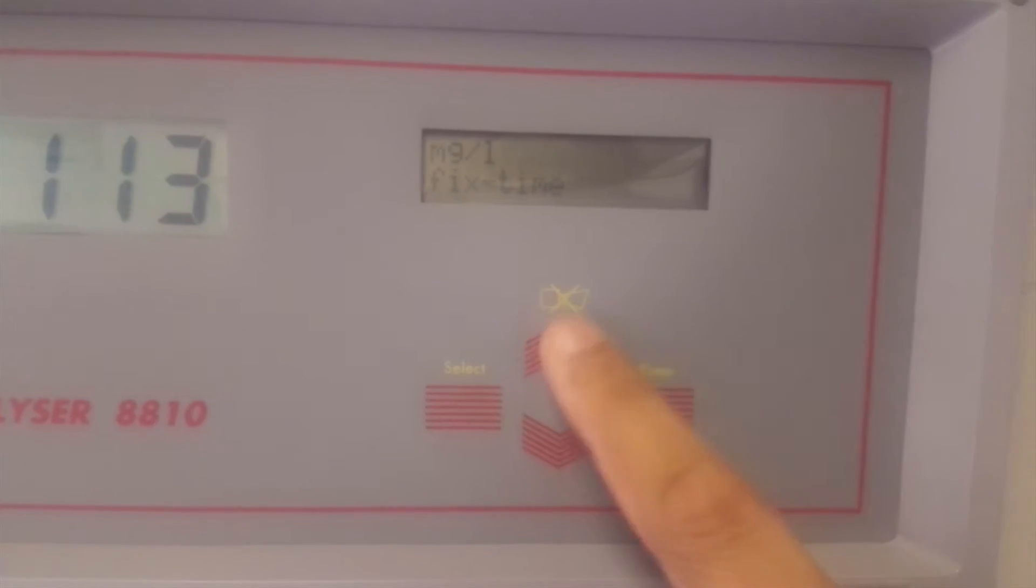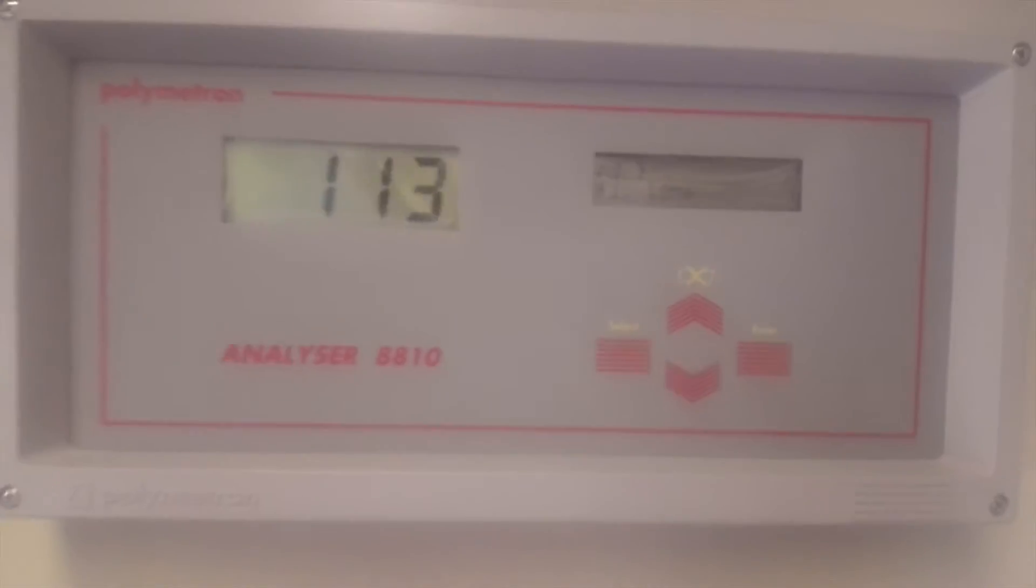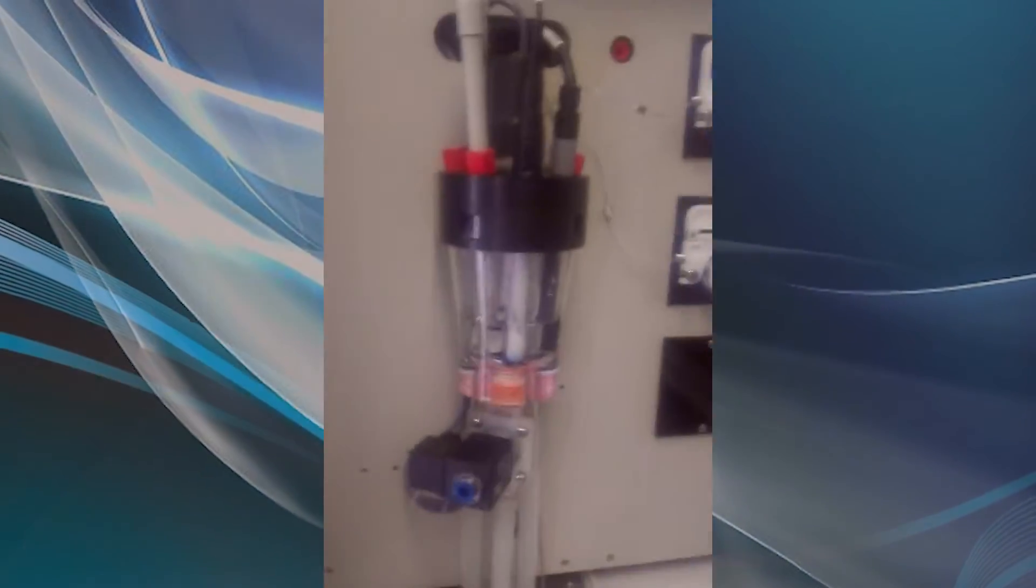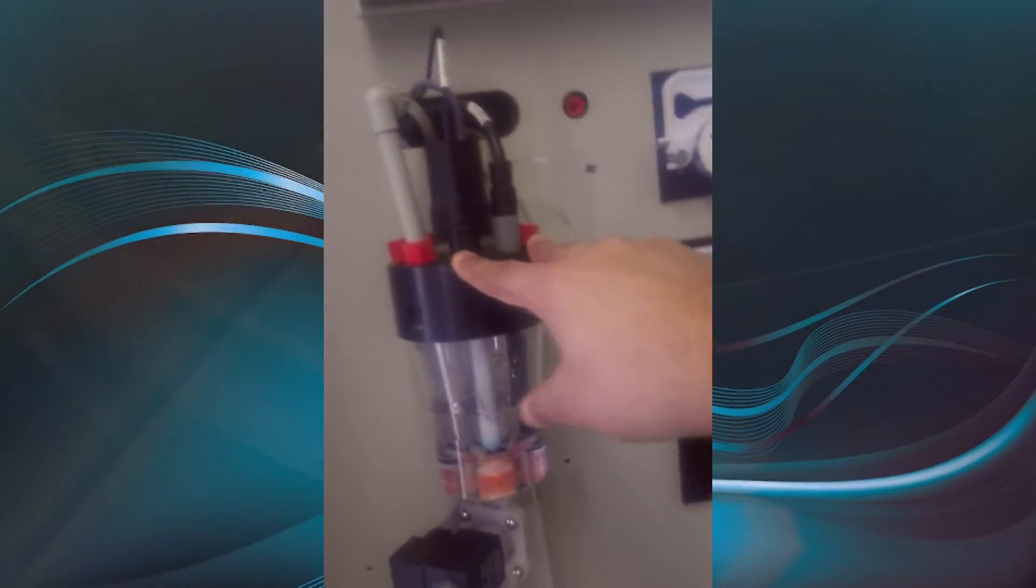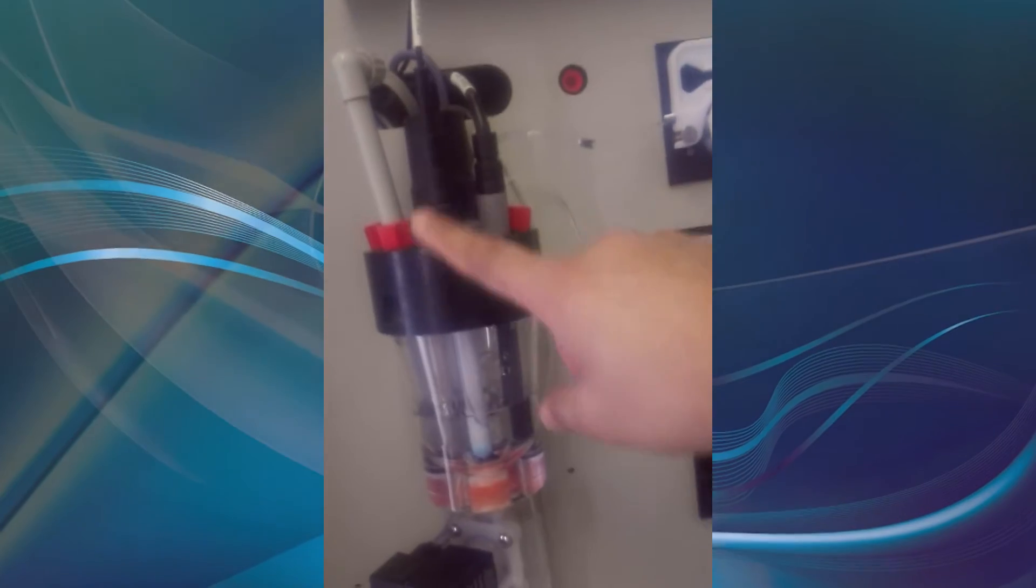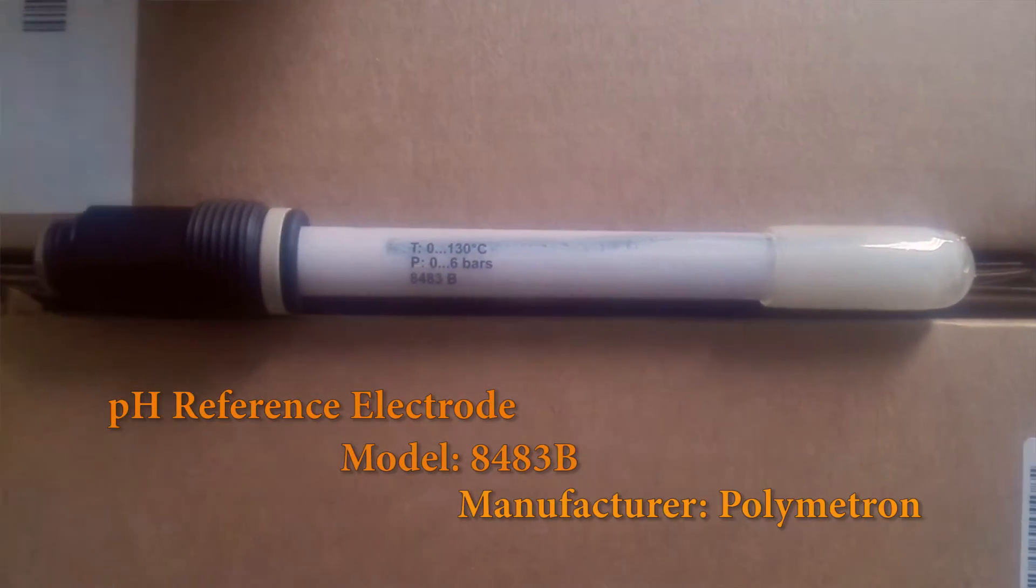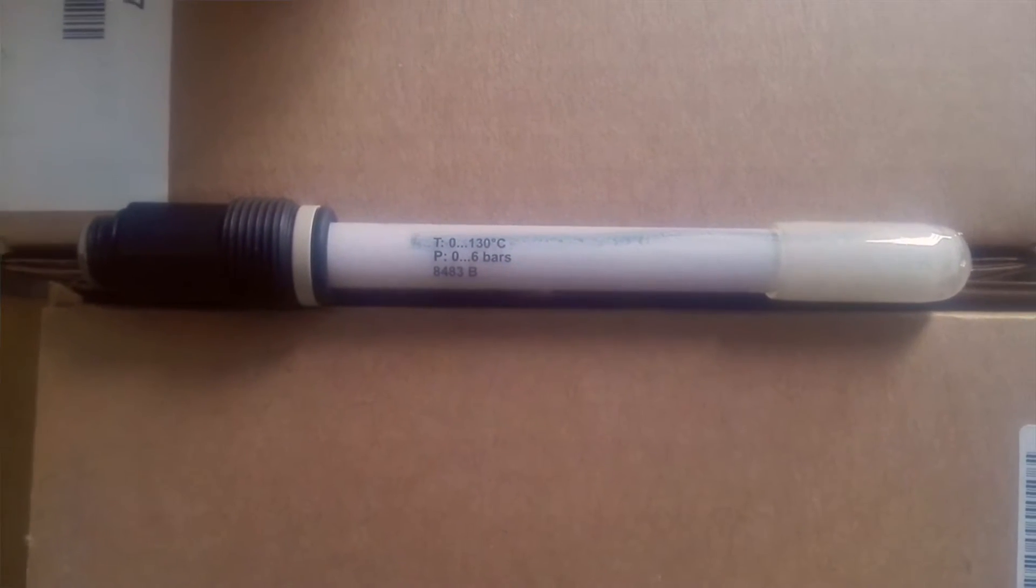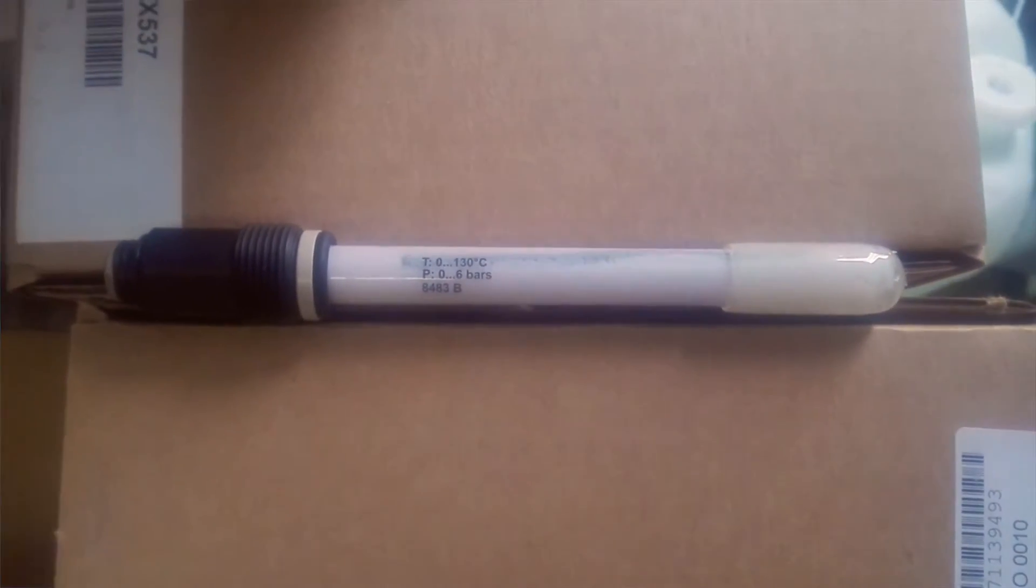This is the sample chamber or reactor vessel with two types of electrodes. One is the reference electrode, model Polymetron 8483B. Actually, it is a pH reference sensor. I know you are confused - why are we using a pH reference electrode instead of an ORP reference electrode? I will tell you: because we are measuring calcium in potable water.